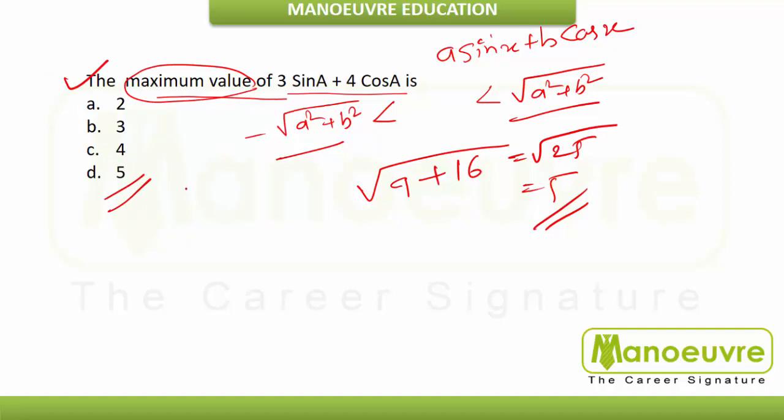Minimum and maximum value questions are among the most frequently appearing question types, along with formula-based questions. You must know the minimum and maximum values of key trigonometric identities and relations by heart before sitting your exam — only then can you solve these types of questions quickly.